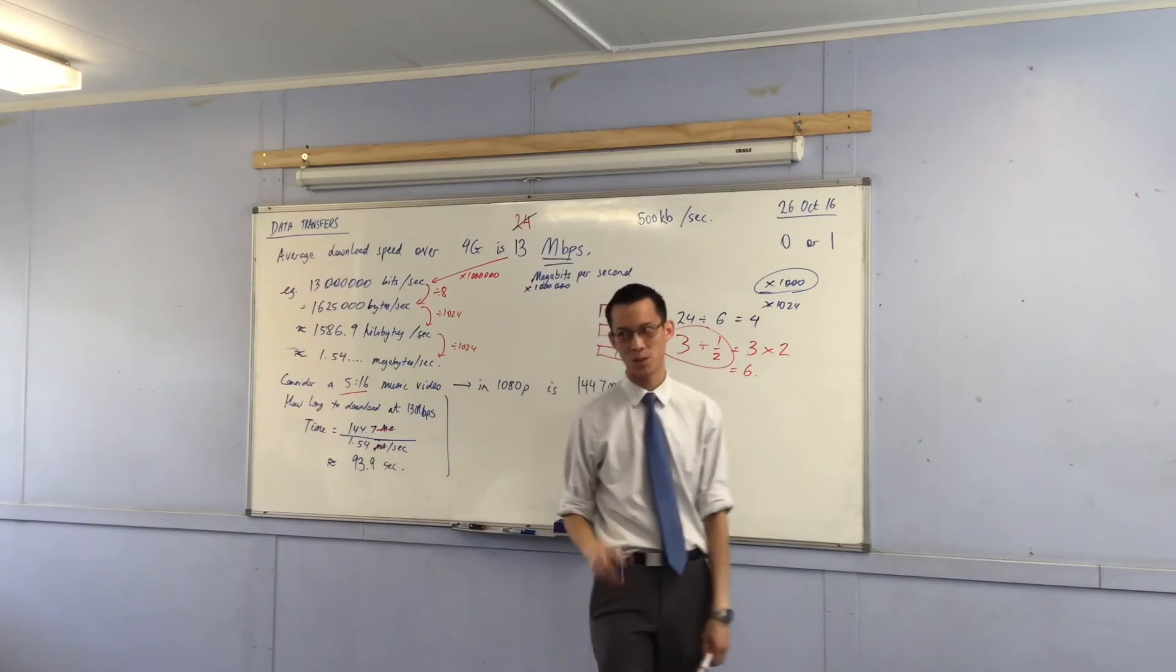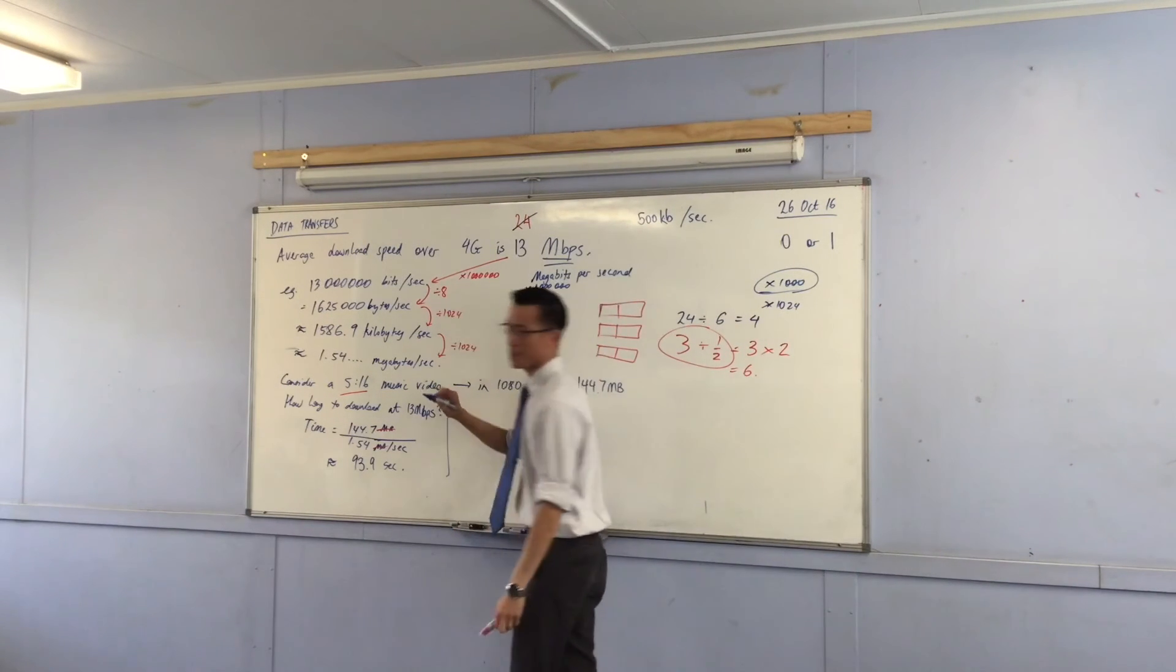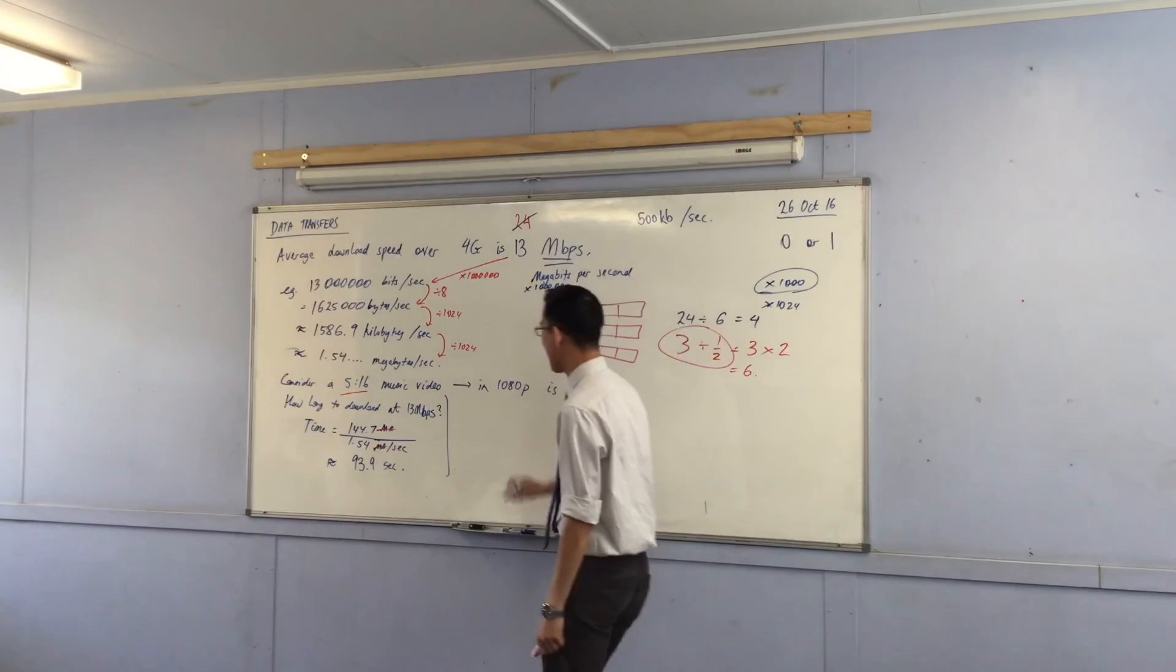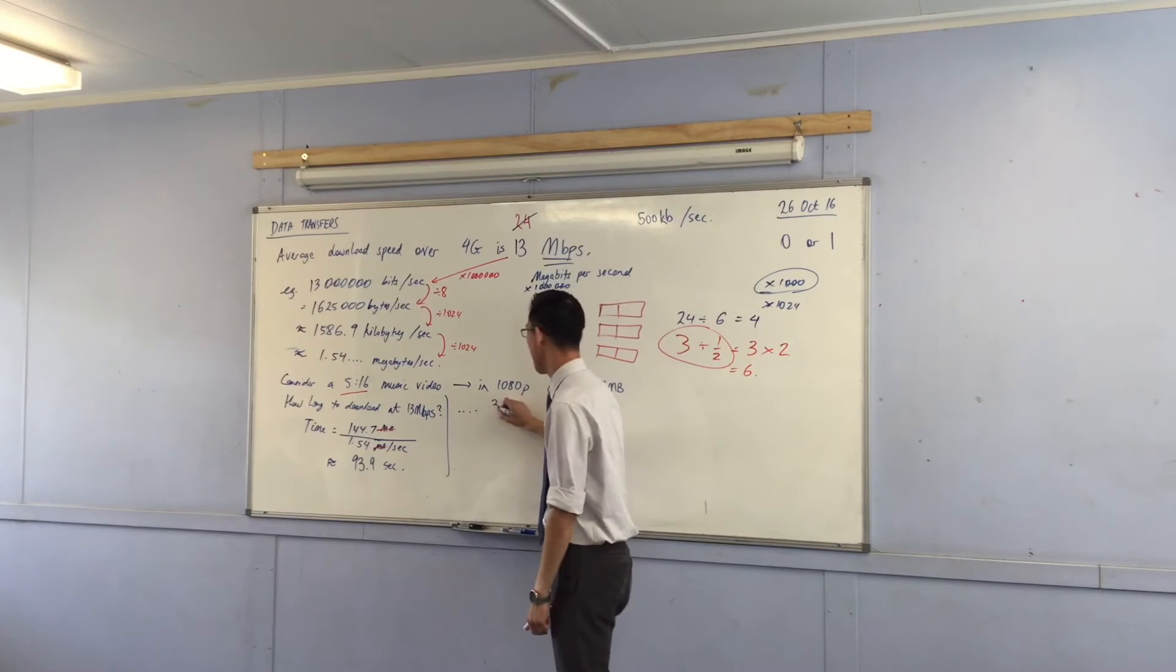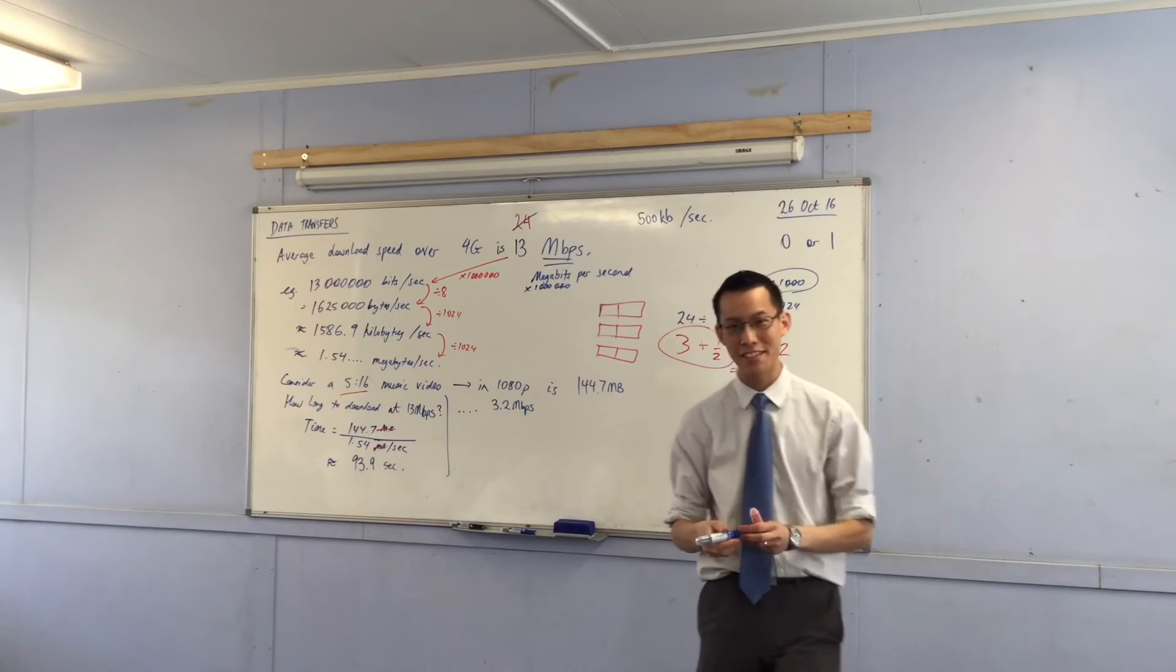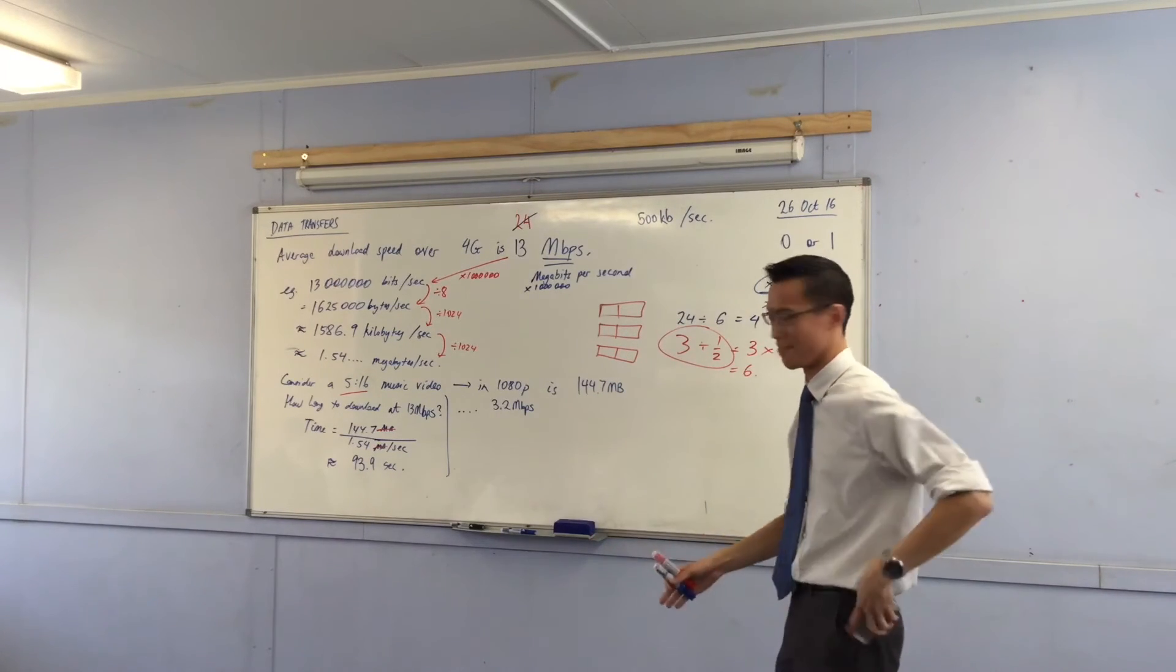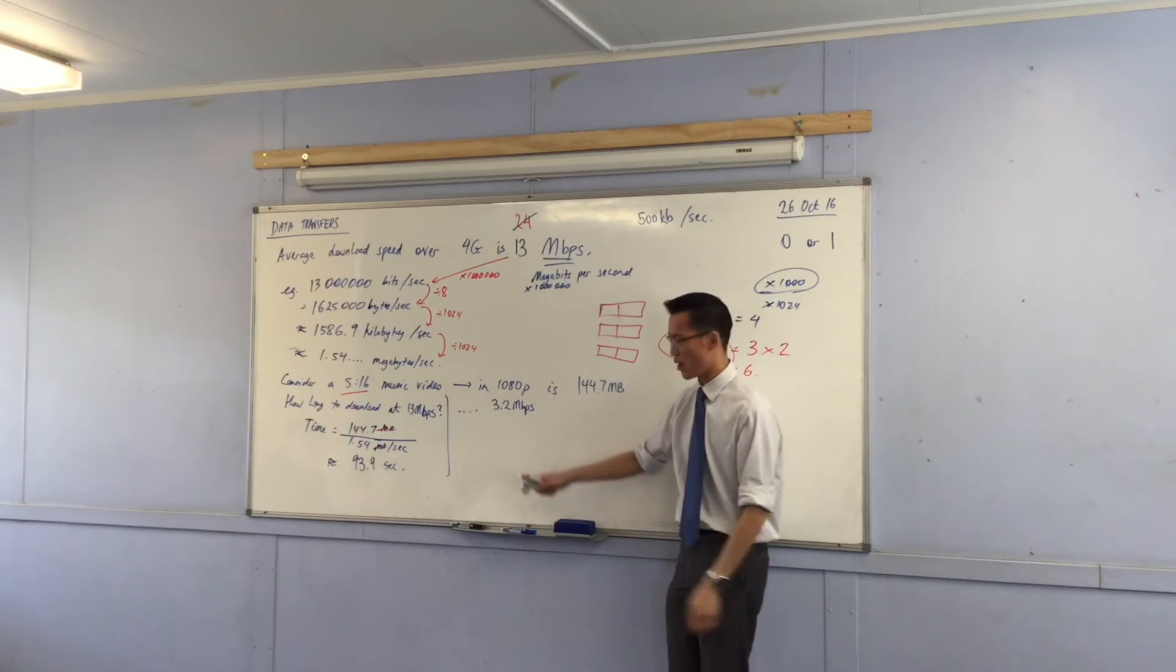The P doesn't stand for pixels, it stands for something else. Now that's how it downloads at this speed. So now I'm going to pose the question to you: what if a whole bunch of people get on the network and instead of this speed, it grinds to a halt and you get this speed? Now it's funny that I say grind to a halt because it's actually stupidly fast still, considering you're getting things from the air. How am I going to work out the time this time? What did we do before?